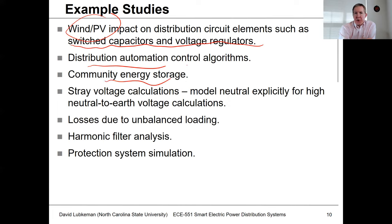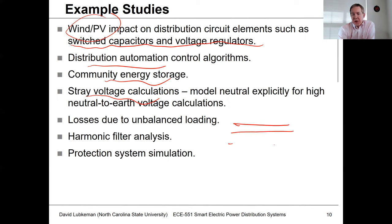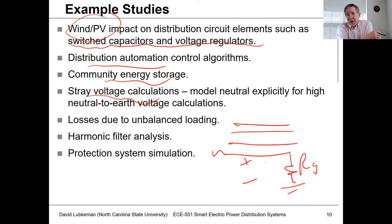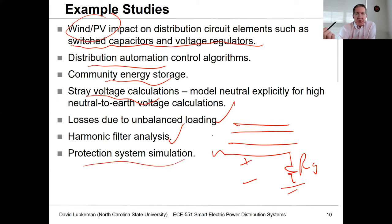OpenDSS was originally developed for wind and PV impact studies on distribution. Through scripting, you can model distribution automation like automated switching schemes, energy storage with custom charge/discharge control algorithms, and stray voltage calculations where a neutral wire has high impedance to earth ground — a characteristic problem in agricultural systems where you may not have good neutral-to-earth ground ties. You can look at unbalanced conditions, harmonic filters, and simulate protection systems. Essentially, through scripting you can customize the engine to simulate almost anything.